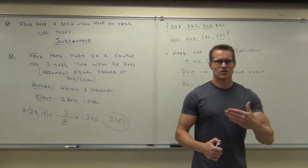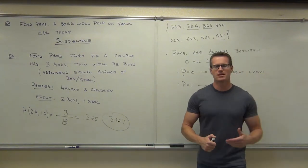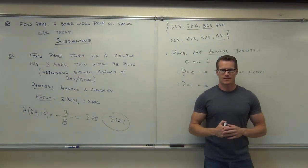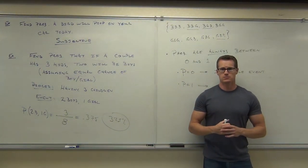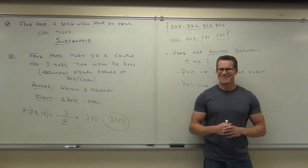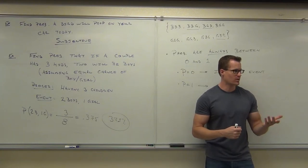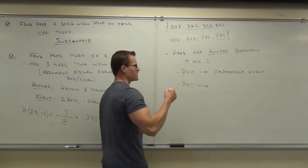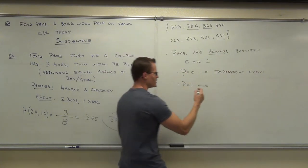Probability of one means more than just possible. It will happen — it's certain. If I say there's a 100% probability that you're going to have homework tonight, that means it's certain you are going to have homework tonight. 100% probability, P equals one, means a certain event.